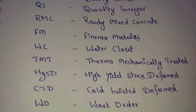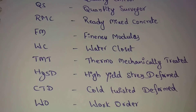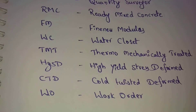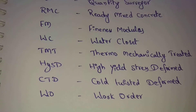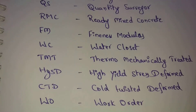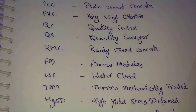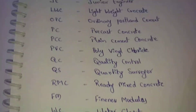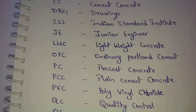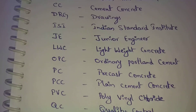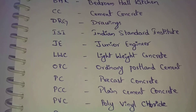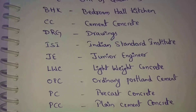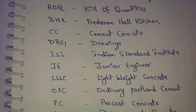Next, WO — WO means work order. These are the main abbreviations in building construction or any other projects.